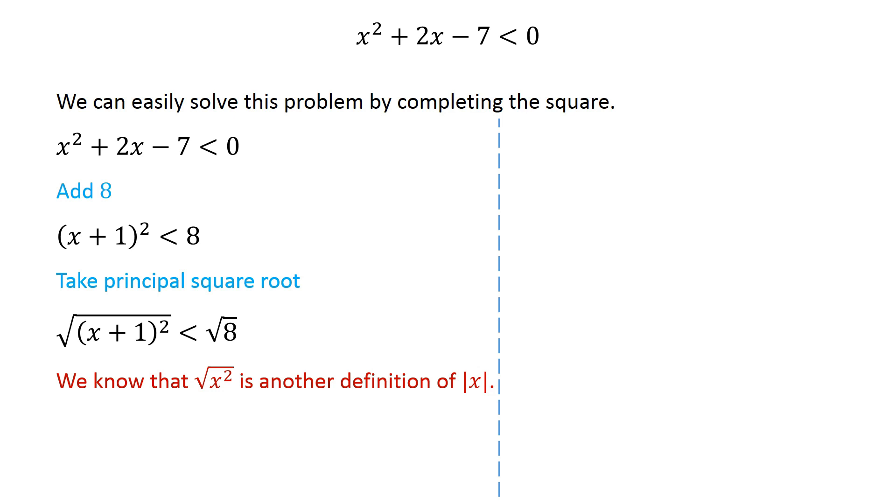We know that principal square root of x square is another definition of modulus of x, and square root of 8 equals 2 times square root of 2, so we can write this inequality as modulus of x plus 1 is less than 2 times square root of 2.